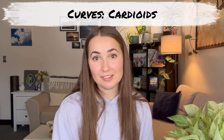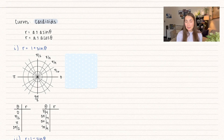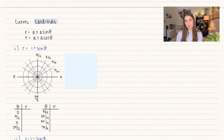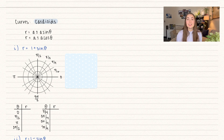Hello everyone, welcome back to Math with Allison. Today we're working in our curve series, so we're going to be talking about polar curves and specifically cardioids. A cardioid is going to be of the form r equals a plus or minus sine of theta, or a plus or minus a cosine theta, where a just represents a number.